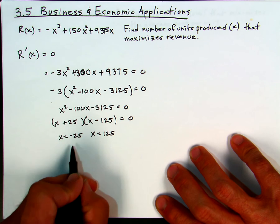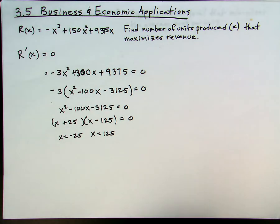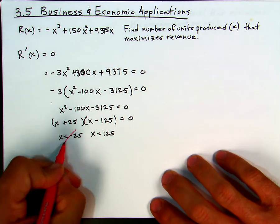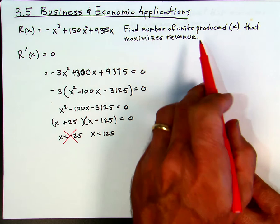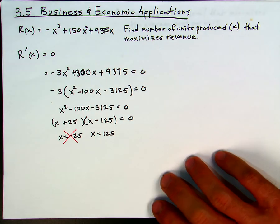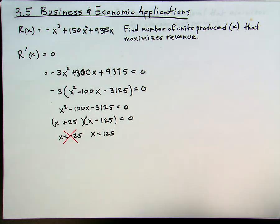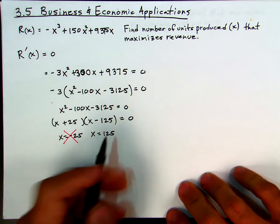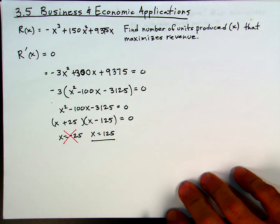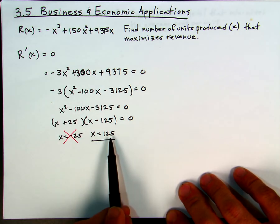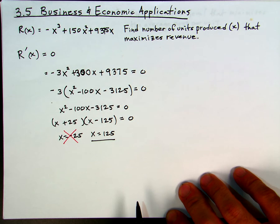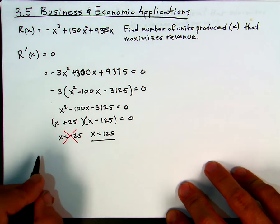Clearly, x = negative 25 we don't want, because we need to produce some units and it has to be a positive number — we can't produce negative units. So it looks like x = 125 is the one that we want. Our conjecture at this point is that this will maximize our revenue, but we should check to see that we actually end up with a maximum.